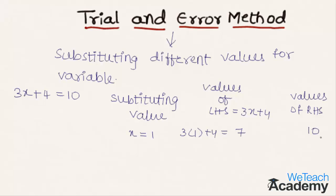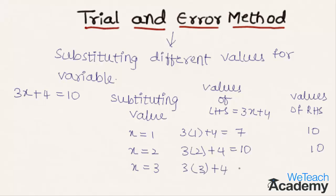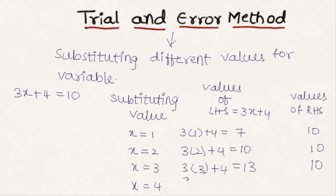Continuing this process: substituting x equal to 2 in the LHS we get 3 into 2 plus 4 equal to 10, and the RHS value is also 10. By substituting x equal to 3 we get 3 into 3 plus 4 equal to 13 as the LHS, with RHS as 10. Similarly, substituting x equal to 4 we get 3 into 4 plus 4 which is equal to 16, and the RHS value is 10.